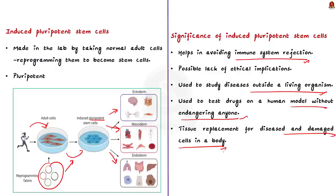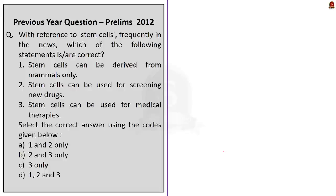We have covered all the dimensions of stem cells. In this news article discussion, we first saw what a cell is — the basic building block of all living things. Then we saw about stem cells and their two types: embryonic stem cells and adult stem cells. Finally, we saw about induced pluripotent stem cells and their significance. Let us now move on to the next news article discussion.